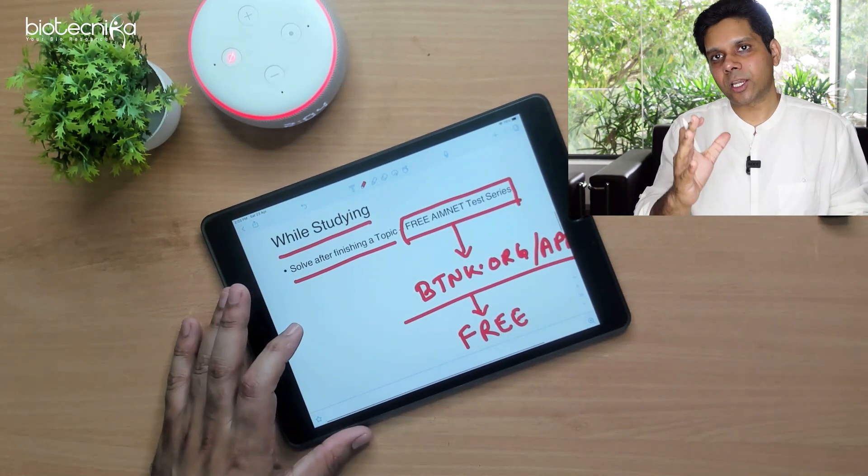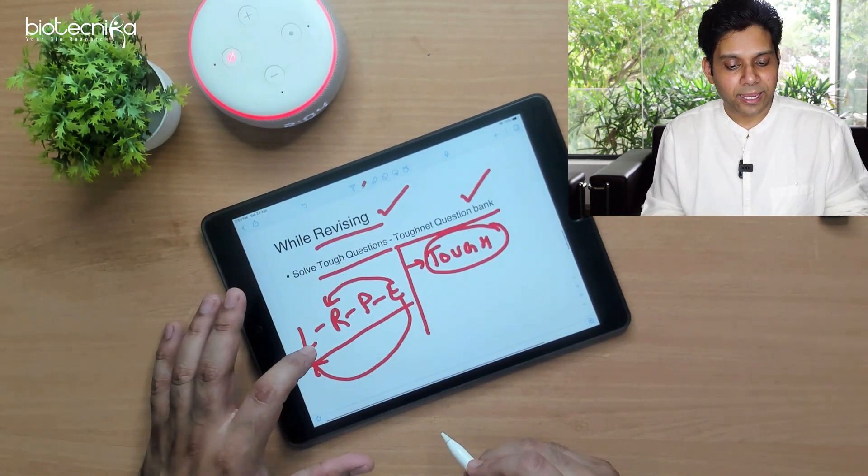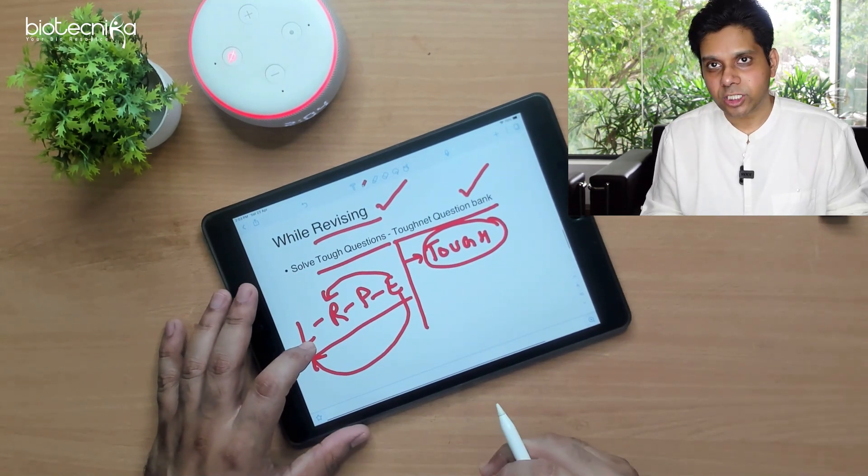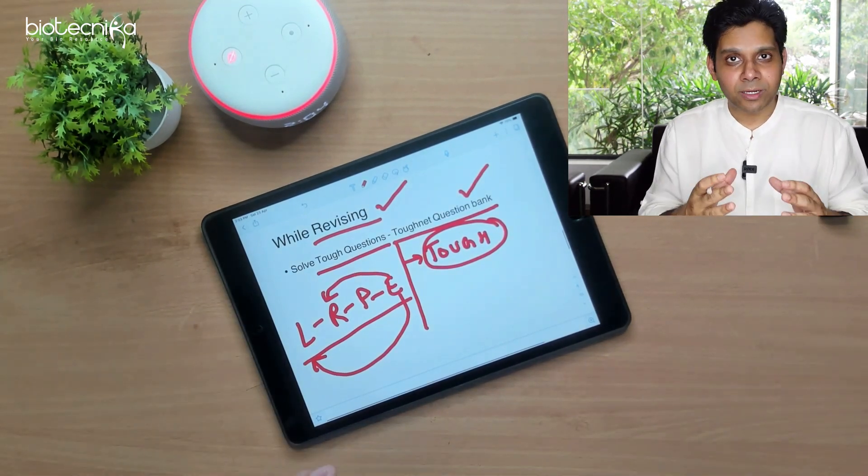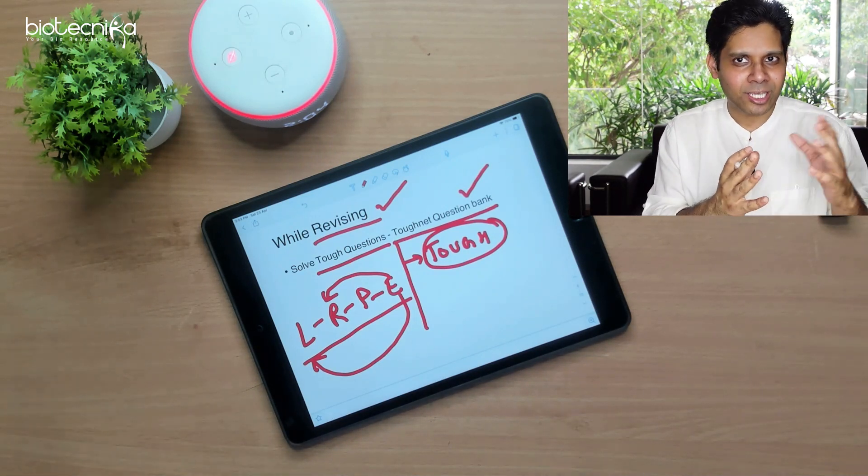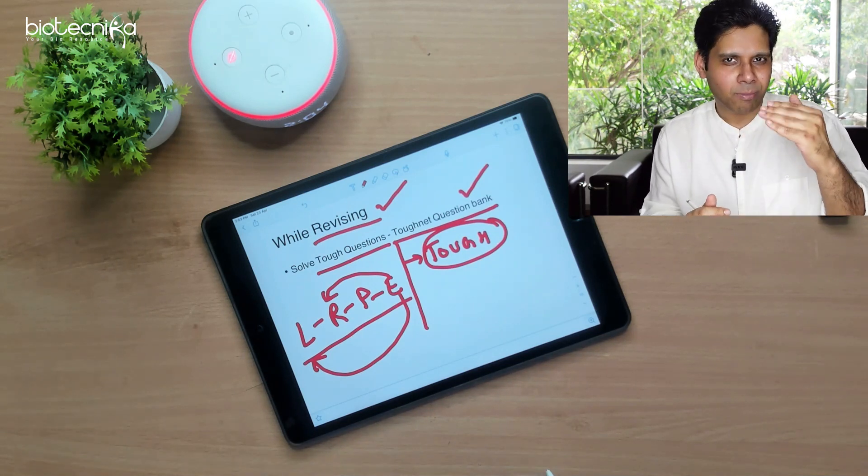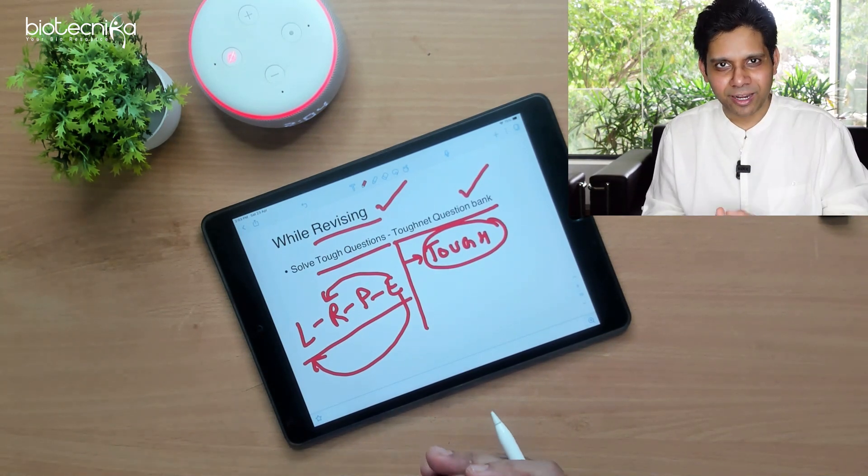I told you how exactly you have to do it while studying. You can take advantage of the free MNET test series. And while revising, you can take advantage of the ToughNet question bank where you have to solve the tough questions. In less time, you will get exposure to the tough questions. Your study will be at the level of CSIR.